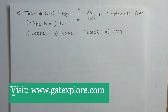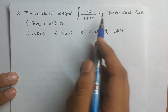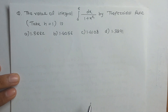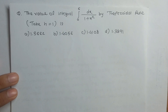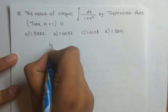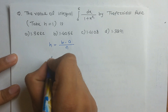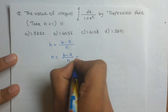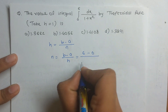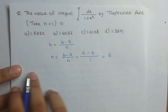Now we solve another example: find the value of the integral from 0 to 6 of dx/(1 + x²) using the trapezoidal rule, with h equal to 1. Here we do not have a given table, so we must build it first. We find n using the formula n = (b − a)/h = (6 − 0)/1 = 6.